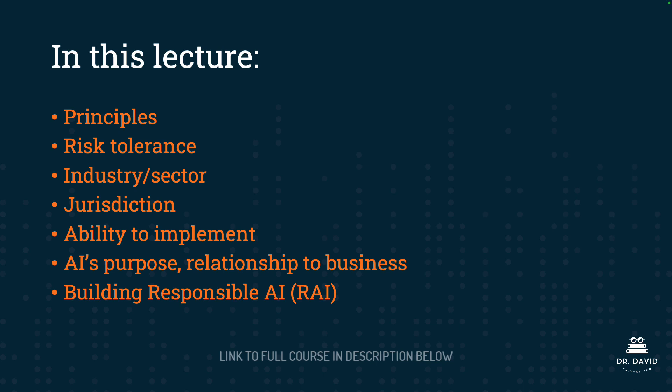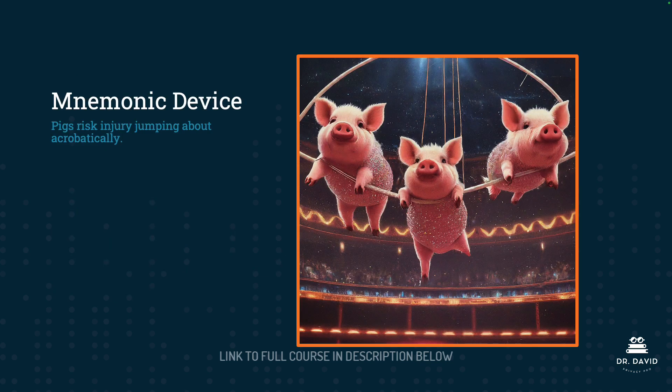What you see here, with the exception of the very last bullet point — Building Responsible AI — provides a checklist to help you think through standing up your own organization's governance framework. You need to think about principles, risk tolerance, your industry or sector, the jurisdiction or jurisdictions you'll be operating in, your organization's ability to implement the governance framework, and AI's purpose and relationship to the business. A useful mnemonic device for this checklist is: pigs risk injury jumping about acrobatically.